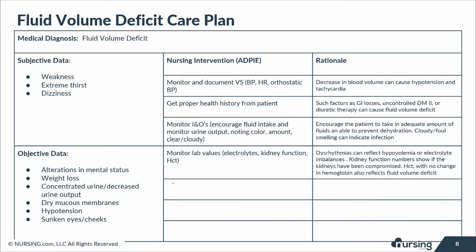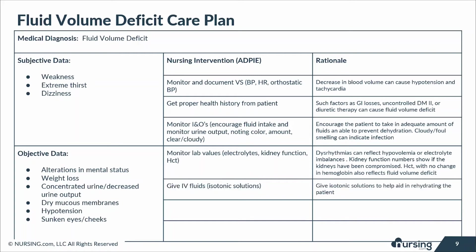We want to make sure we're giving IV fluids or isotonic solutions, such as normal saline, lactated Ringer's, or 5% dextrose in water, to help aid in rehydrating these patients. We also want to make sure we're getting daily weights, doing this at the same time every day, as this is the best way of tracking fluid volume balance.